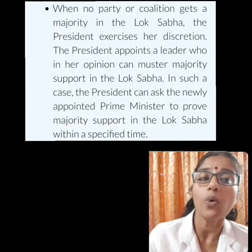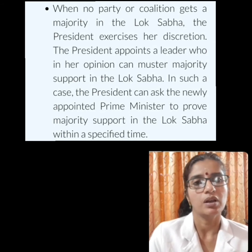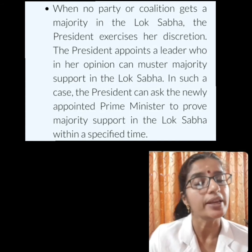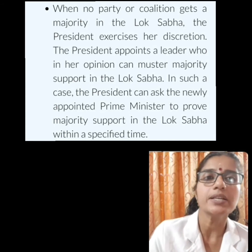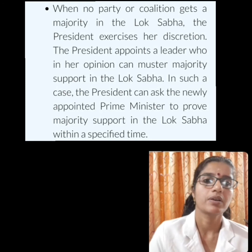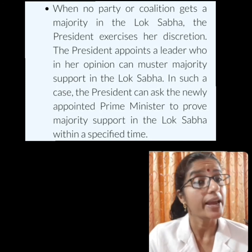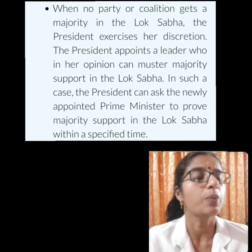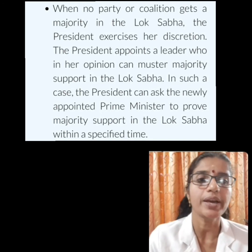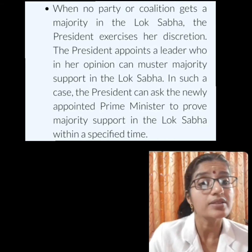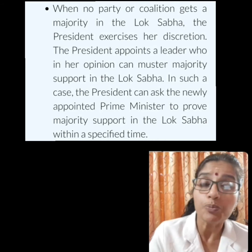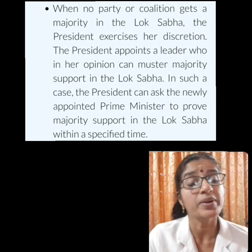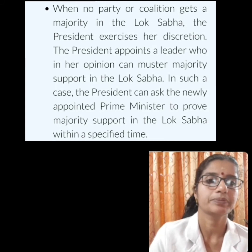The President also enjoys discretionary powers. When no party or coalition gets a majority in the Lok Sabha, the President exercises her discretion. The President appoints a leader who, in her opinion, can muster majority support in the Lok Sabha. In such a case, the President can ask the newly appointed Prime Minister to prove majority support in the Lok Sabha within a specified time.